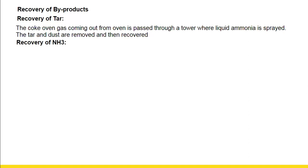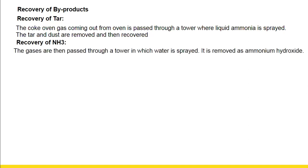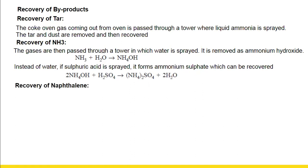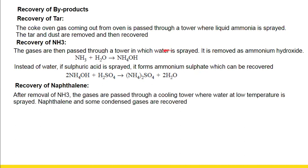The next byproduct recovered is ammonia. For the recovery of ammonia, the gases are passed through a tower in which water is sprayed. Ammonia reacts with water to form ammonium hydroxide. Alternatively, sulfuric acid can be used instead of water; it reacts with ammonia to form ammonium sulfate, which can be recovered. The next byproduct recovered is naphthalene: after removal of ammonia, the gases are passed through a cooling tower where water at low temperature is sprayed, and the naphthalene along with some condensed gases is recovered.